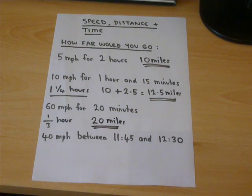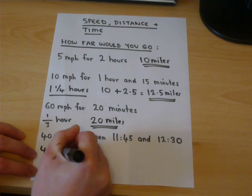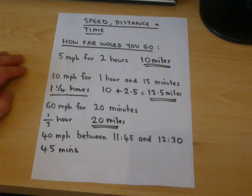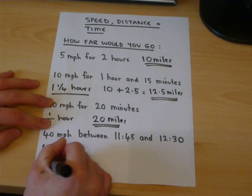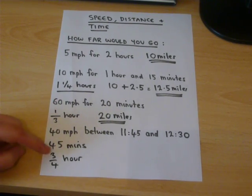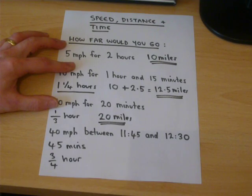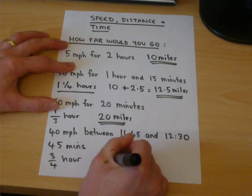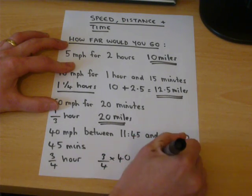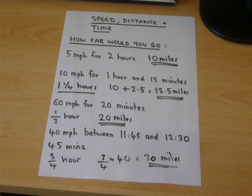A third of 60 is 20. And the final one — how long has he travelled for? 45 minutes. Now 45 minutes out of an hour is three quarters of an hour. So if he does 40 miles in a whole hour, then in three quarters of an hour, one quarter of 40 is 10, so three quarters of 40 is 30. In other words, he travels 30 miles in three quarters of an hour.